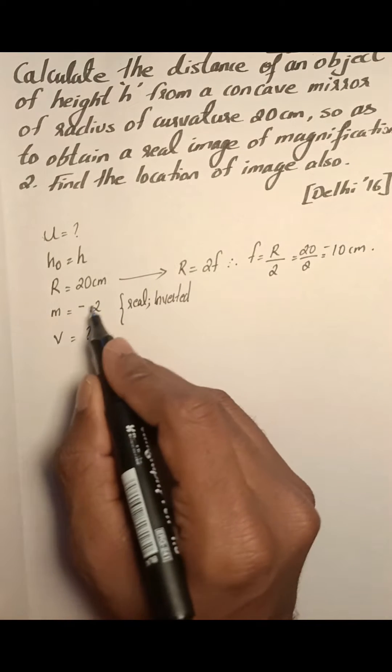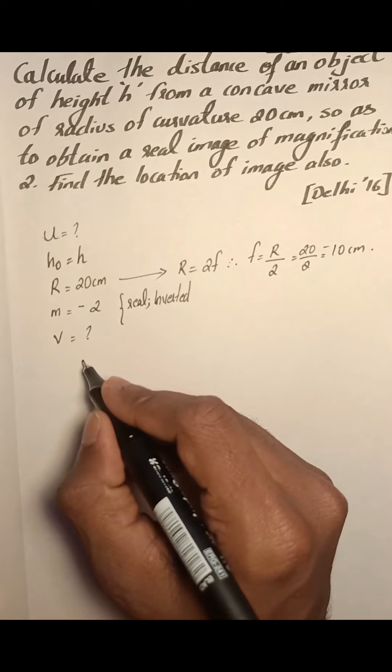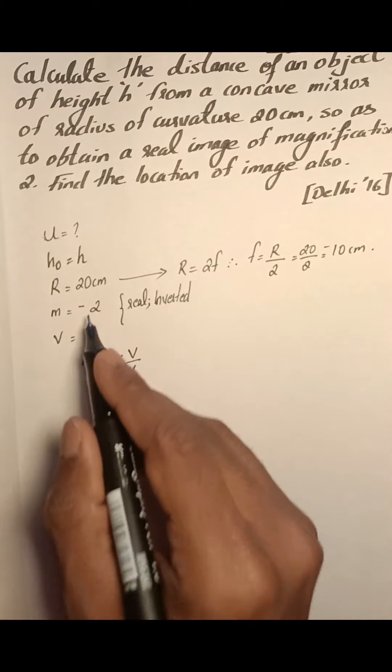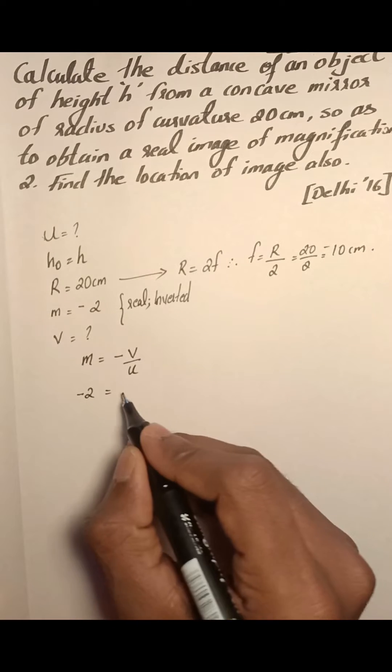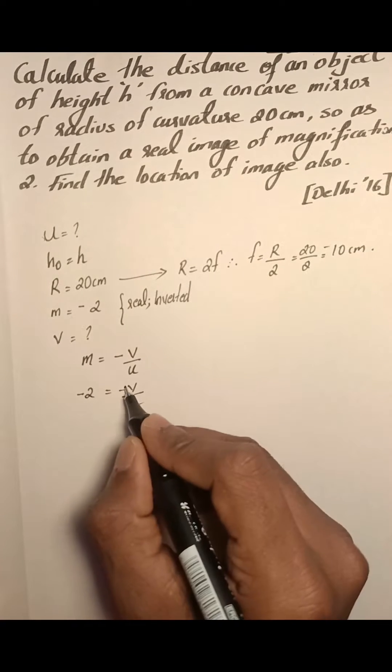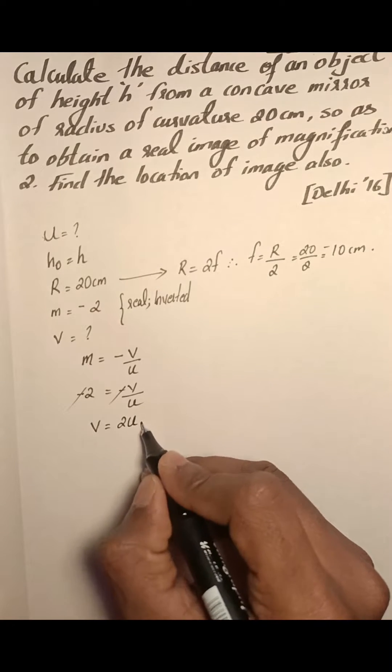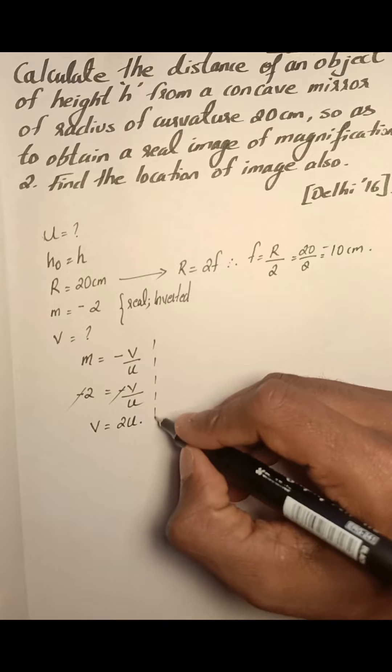We will start with the magnification of the given mirror. For a mirror, magnification is equal to minus v by u. The value of magnification is minus 2. So minus 2 equals minus v by u. These minus signs get cancelled. Thus v equals 2u. So we got a relation between v and u.